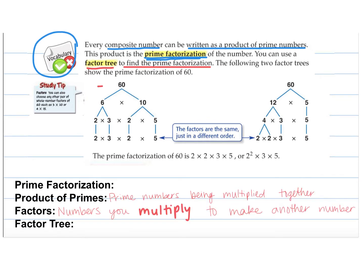So for the factor tree here for 60, you can see we have 60 at the top, and then we are breaking down this number into all the numbers that multiply together to make 60, and we keep going until at the very end we only have prime numbers left. These are both factor trees of 60. They started out differently — notice 6 and 10, or 12 and 5 — but at the very end we end up with the same answer.